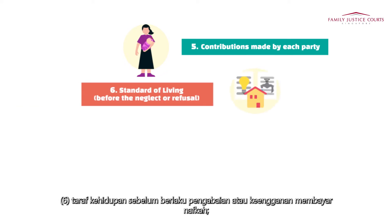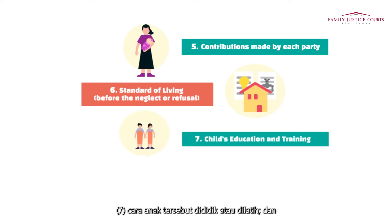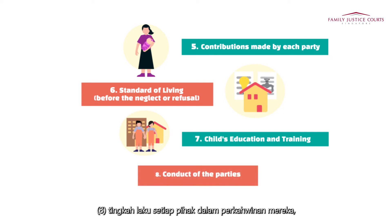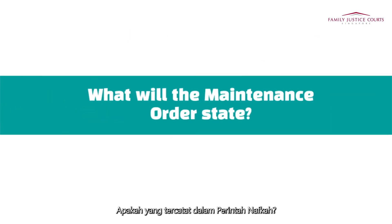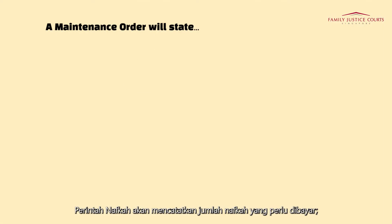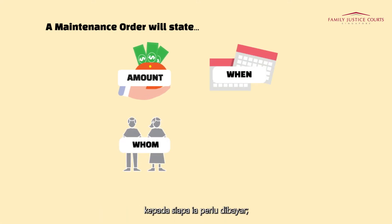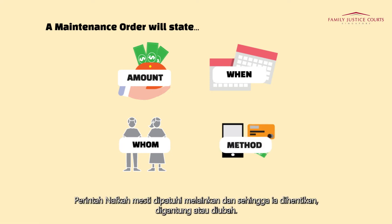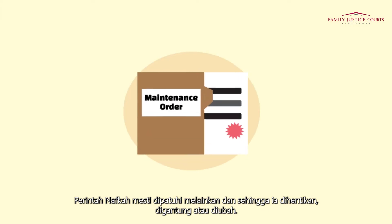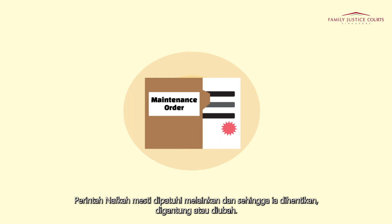The court also considers: 6) the standard of living enjoyed before the neglect or refusal; 7) the manner in which the child was being educated or trained; 8) the conduct of each of the parties to the marriage, if the conduct is such that it would, in the opinion of the court, be inequitable to disregard it. A maintenance order will state the amount of maintenance to be paid, when it is to be paid, to whom it is to be paid, and the method of payment. A maintenance order must be obeyed unless and until it is rescinded, suspended, or varied.